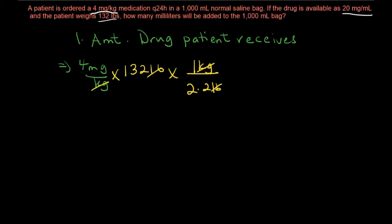So basically we multiply 4 mg by 132 and divide that by 2.2. That would tell us how much the patient needs, and that would be 240 mg. So the patient needs 240 mg of drug.